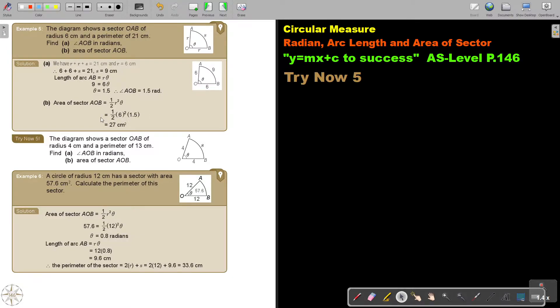Let's look at an example. The diagram shows a sector OAB of radius 6 and the perimeter of 21. So that will be 21, perimeter of 21. So if this is 6, 6. So if I'm going to say 21 minus 12, so what will be left? 9.